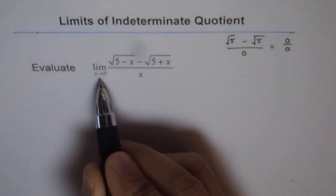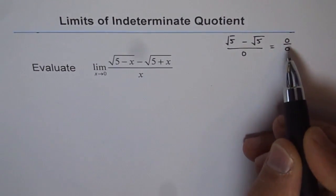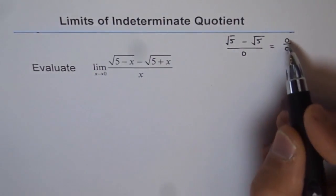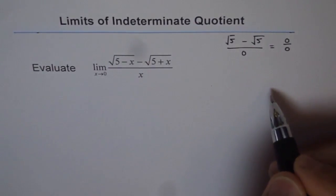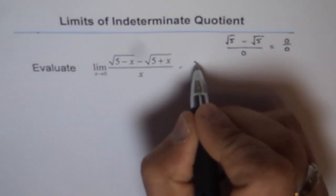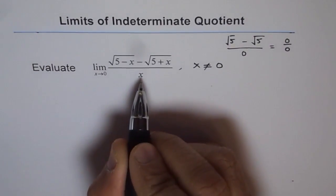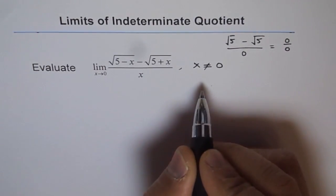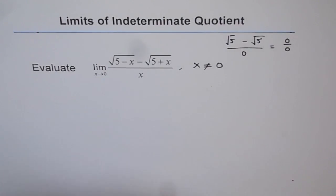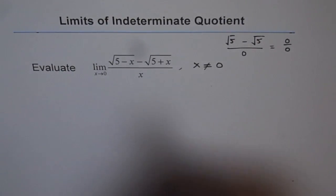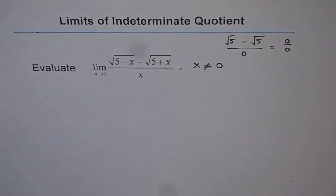When we substitute the limiting value and get 0 over 0, this is called an indeterminate quotient — we get 0 in both numerator and denominator. Now, x is not equal to 0; the function itself is not defined at x equals 0. But the limit may exist, because the limit is not the value of the function — it is the value which the function is approaching as we approach that point.